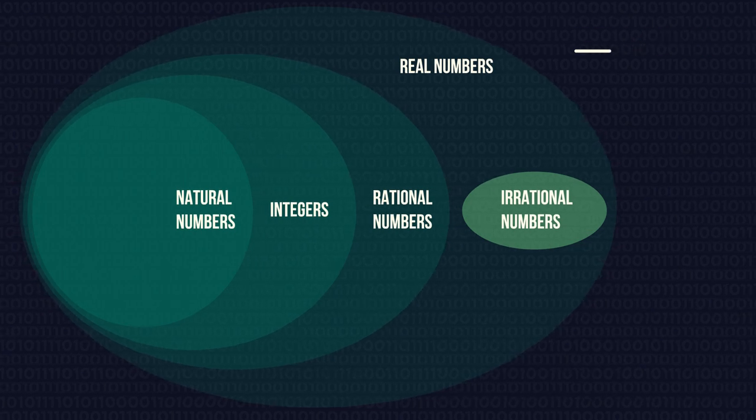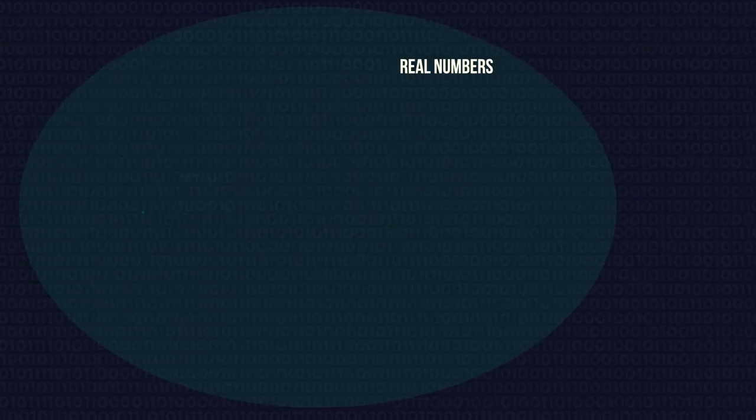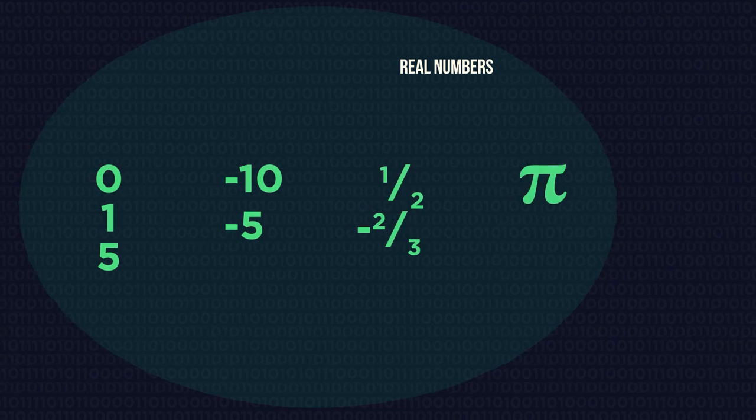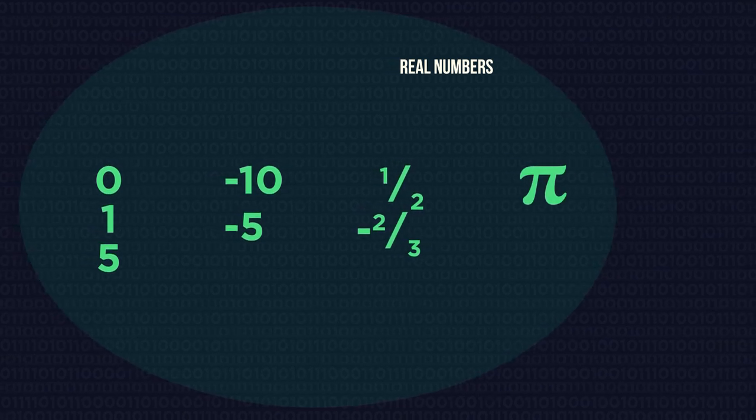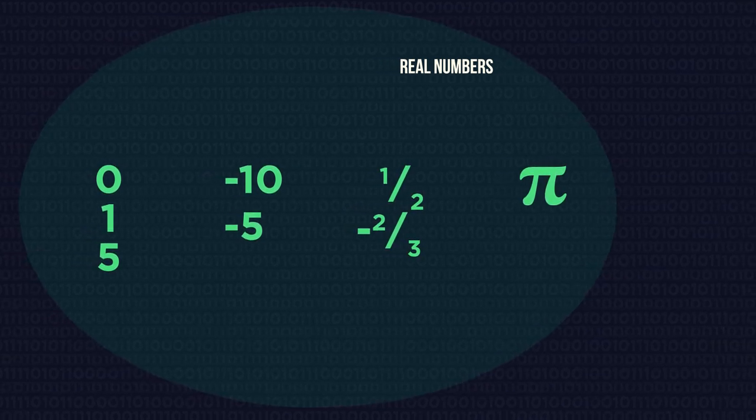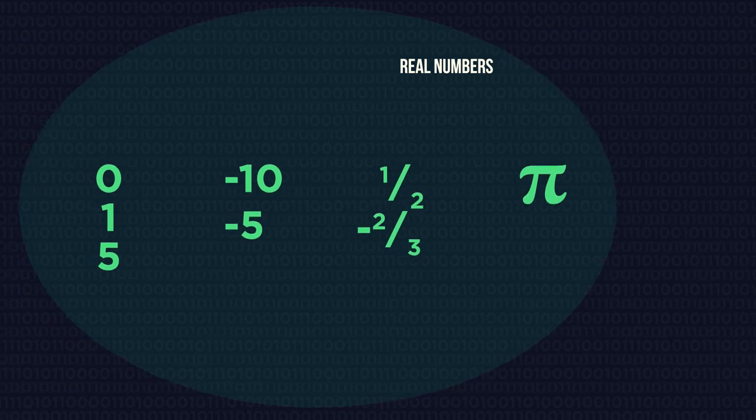Let's start at the top with real numbers. They can be positive, negative, zero, decimals, fractions, pi. Nearly any number you can think of is a real number.